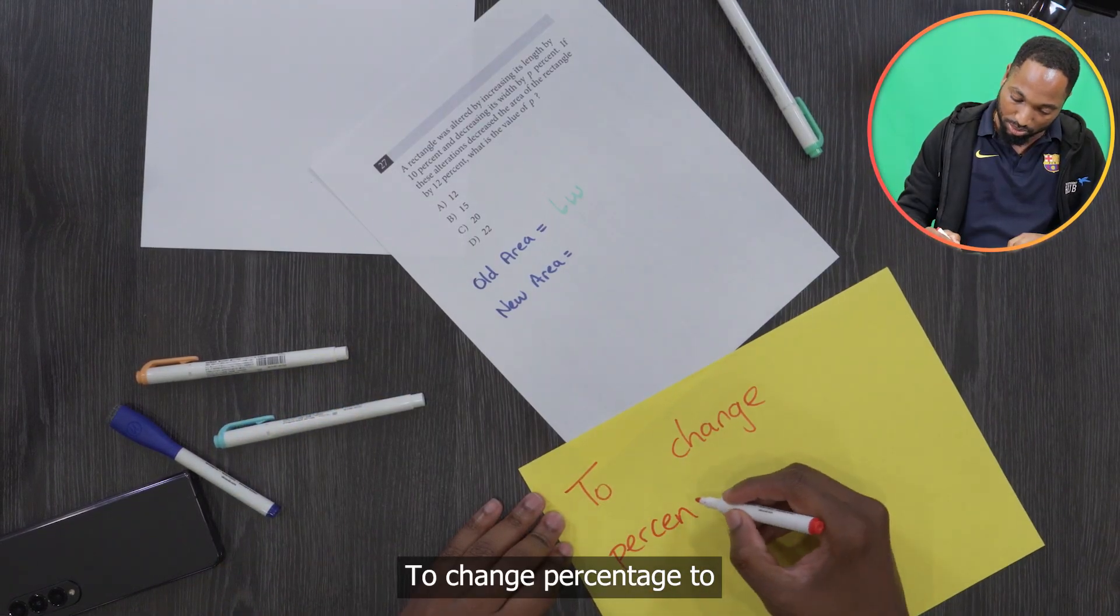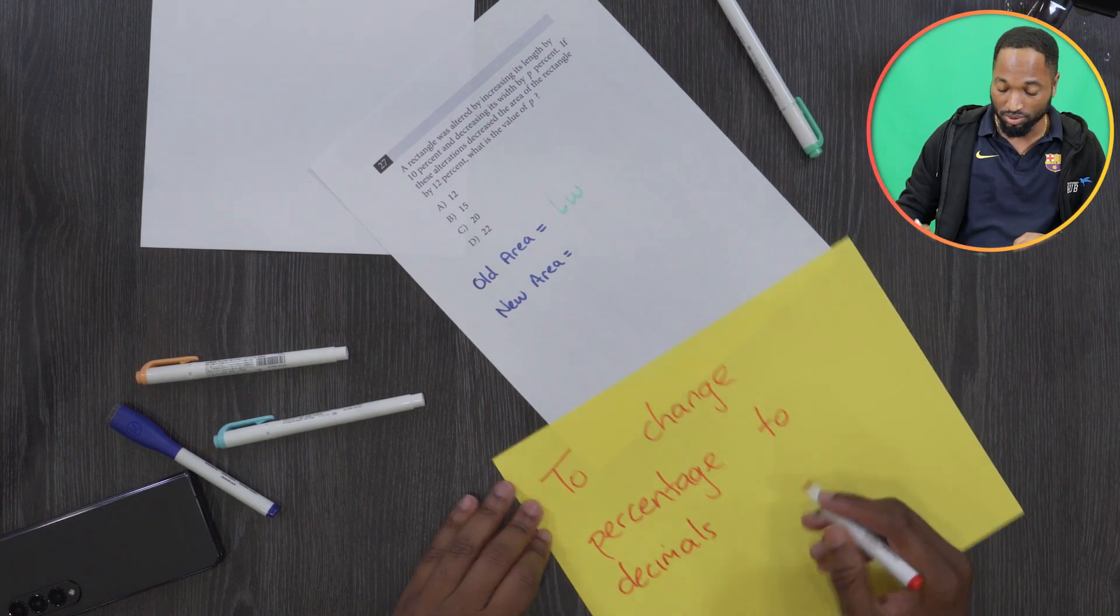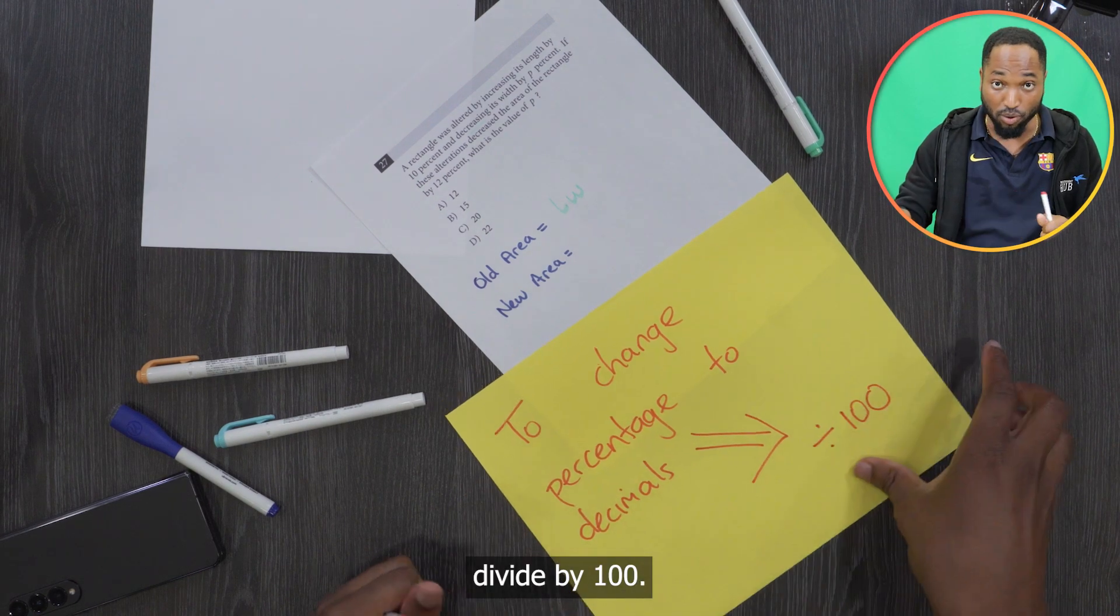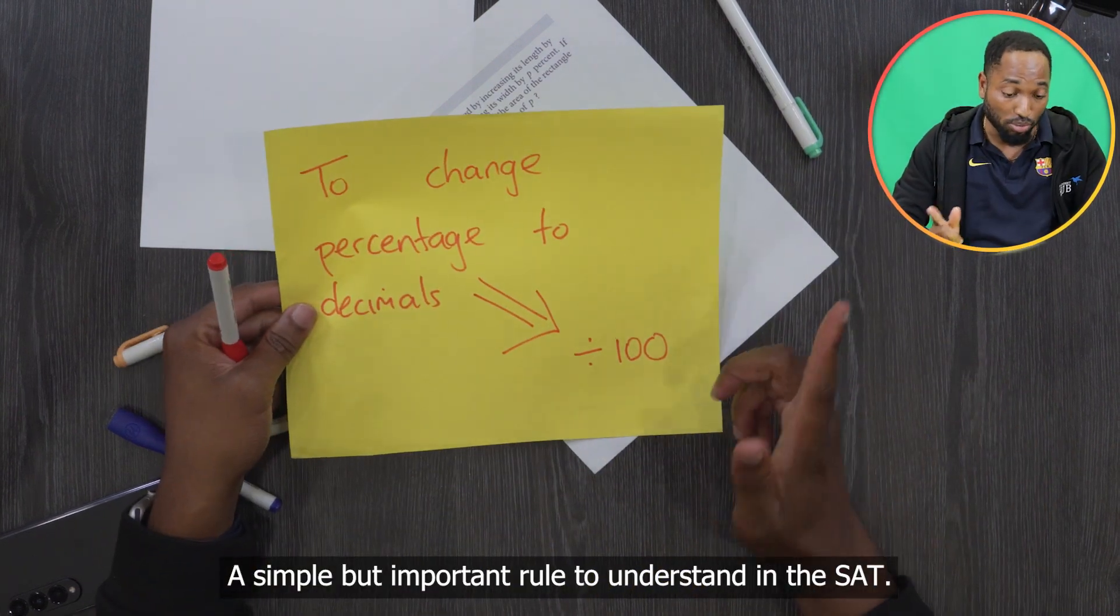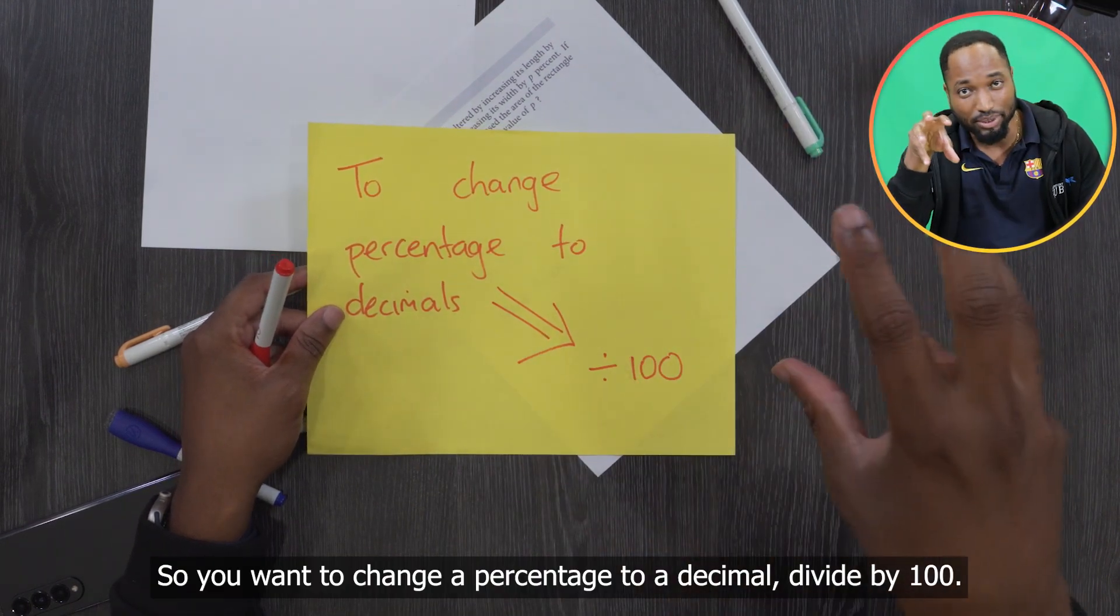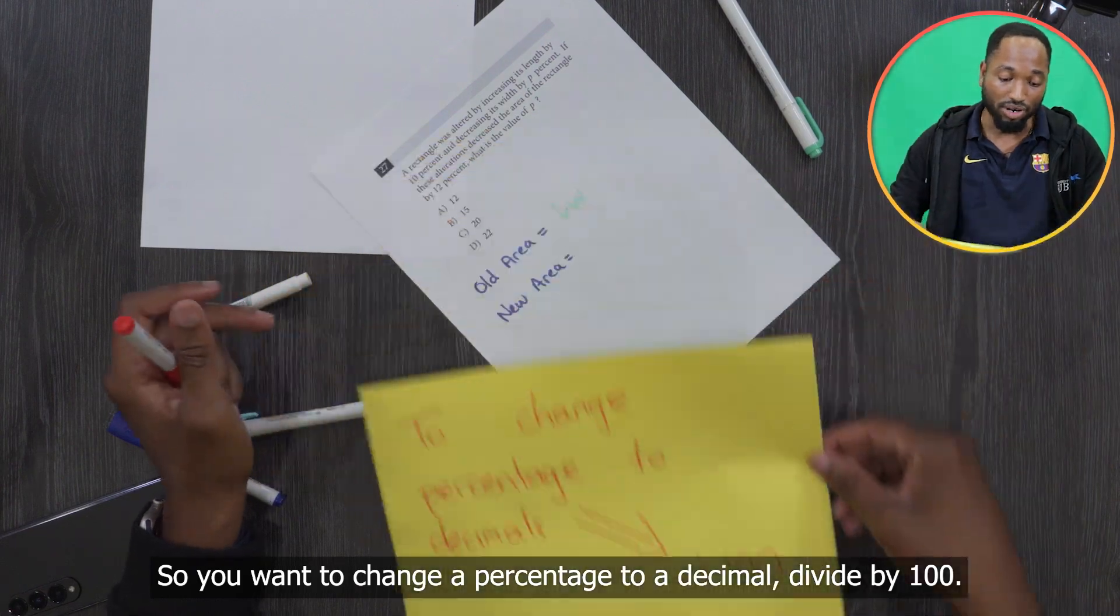To change percentage to decimals divide by 100. A simple but important rule to understand in SAT, for sure every exam you're going to apply this. So you want to change the percentage to your decimal, divide by 100.